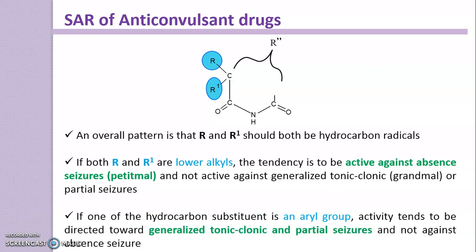If one of the hydrocarbon substituents is an aryl group, the activity tends to be directed towards generalized tonic-clonic and partial seizures, and the compound is not active against absence seizures. So this substitution pattern gives a different pharmacological action — when one alkyl group is an aryl group, it provides activity against generalized tonic-clonic and partial seizures.